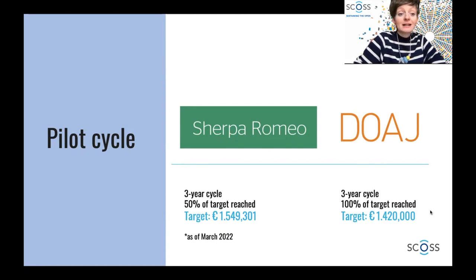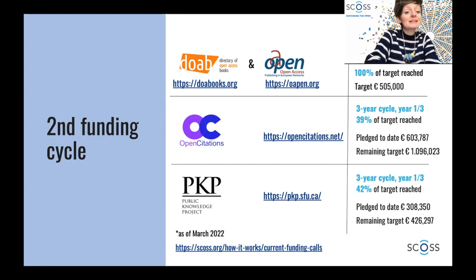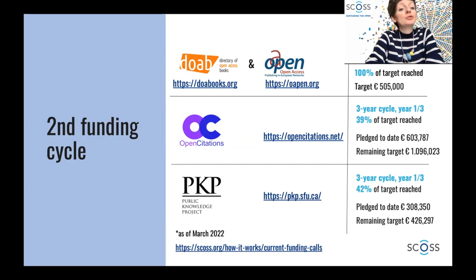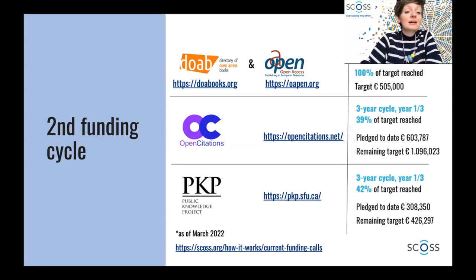In our second cycle, we have DOAB and OAPN, which also managed to reach their target just last year. We have two other infrastructures in this cycle still getting there: Open Citations, currently at 39 percent of their target, and PKP — the Public Knowledge Project — currently at 42 percent. So as you can see, there is still a long way to go, especially for these two infrastructures.